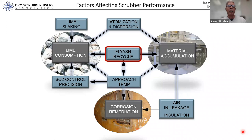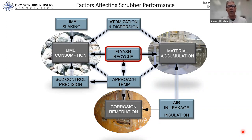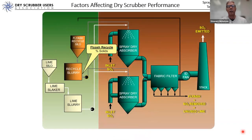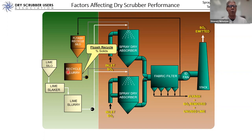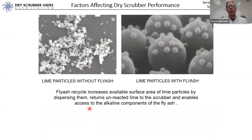Moving on — we're going to talk about fly ash recycle. Recognizing that many dry scrubbers don't have fly ash recycle, we won't dwell too long, but most of the big ones do, and it has a significant effect on lime consumption and material accumulation. We're taking that fabric filter byproduct, collecting the solids, wetting it with water to make a slurry, and re-injecting it alongside the fresh lime slurry reagent into the systems.